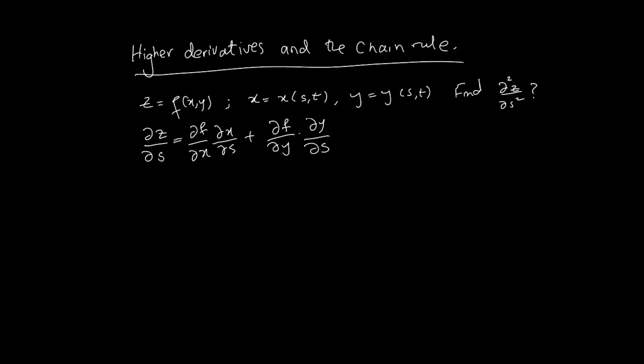In this video we're going to look at how we use the chain rule to calculate higher derivatives, and specifically the second derivative. The situation is similar to what we've seen before: z is a function f of x and y, and x itself is a function of two variables s and t, and so is y. We're asked to find the second derivative of z with respect to s, and in order to do that we need to use the chain rule twice.